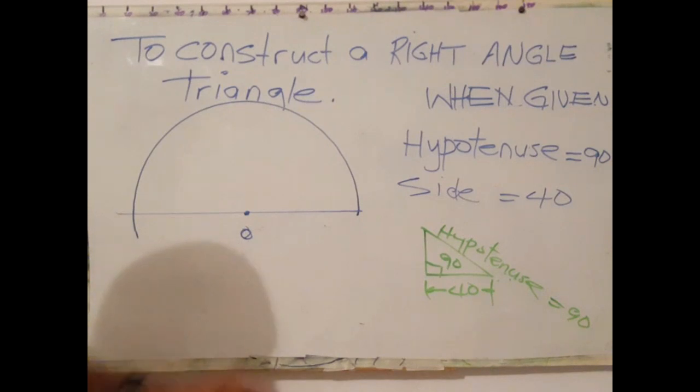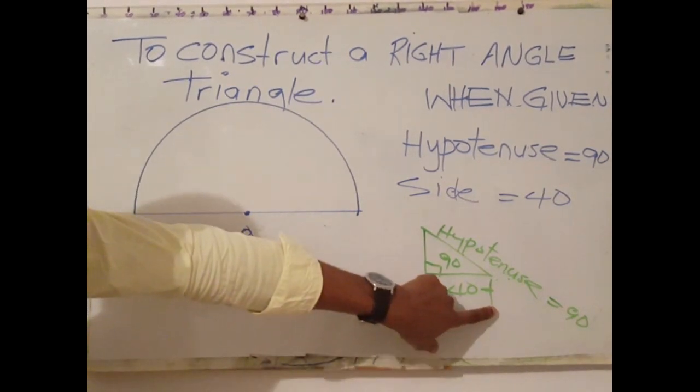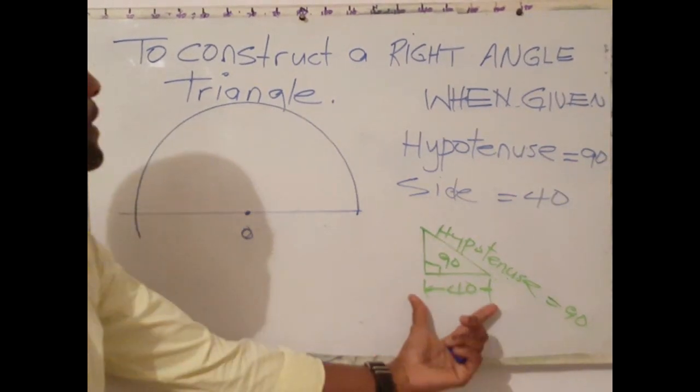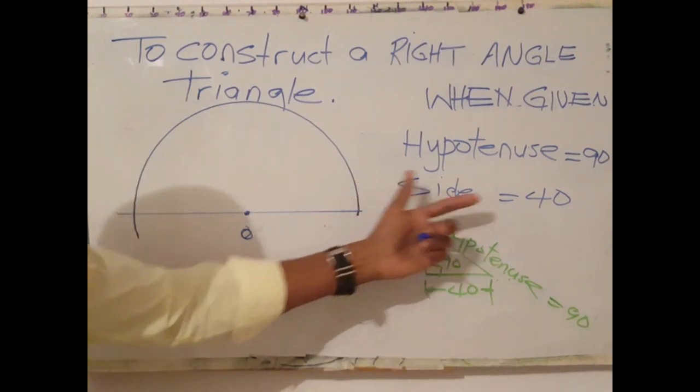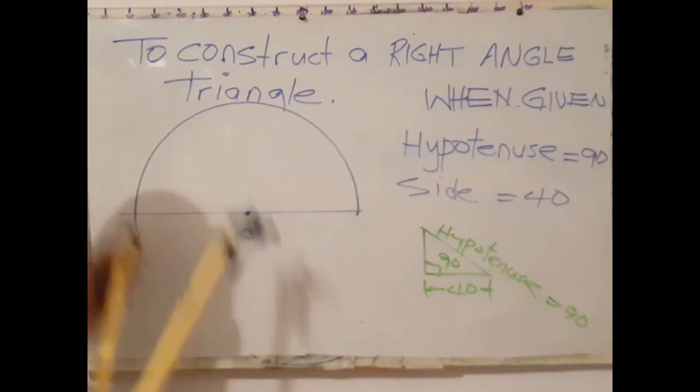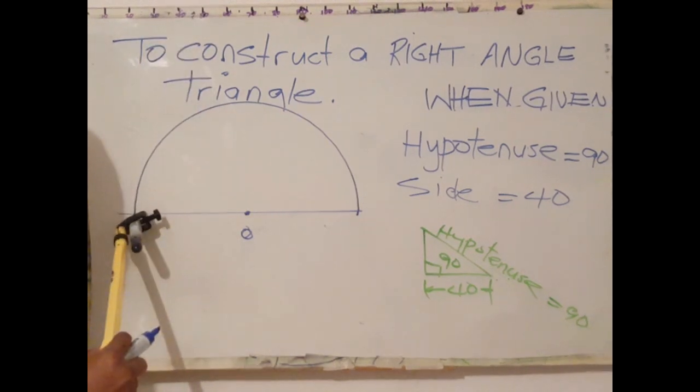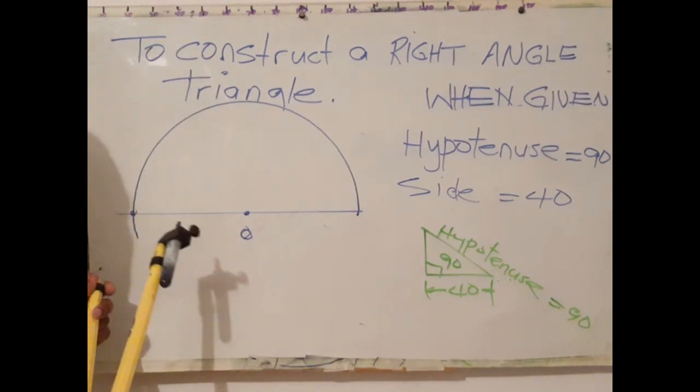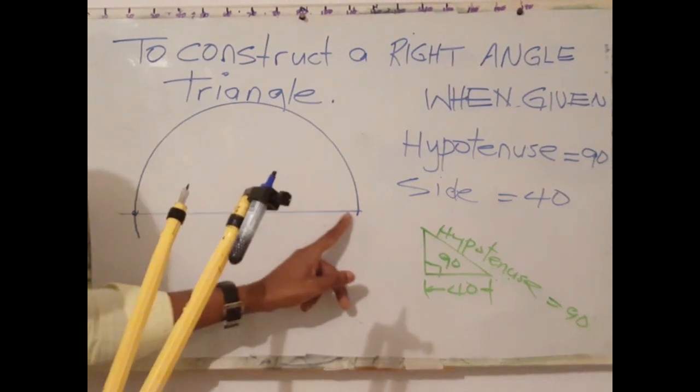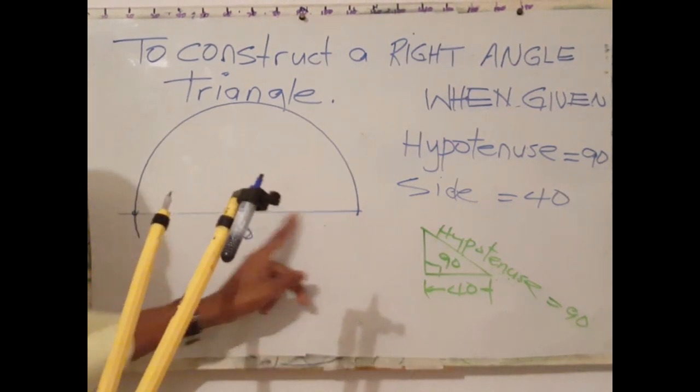The next step is to open my compass to the given length or the given side. In this case, the length of the given side is 40 millimeters. So I readjust my compass to 40 millimeters. And I choose here to be one point. So the hypotenuse will basically be here. The base will be the hypotenuse.